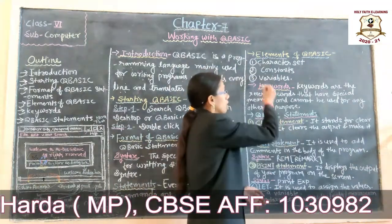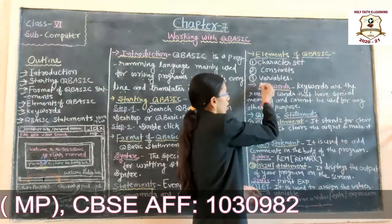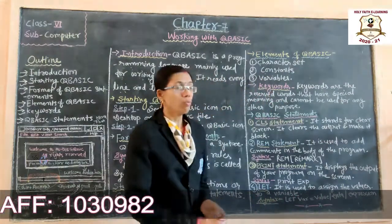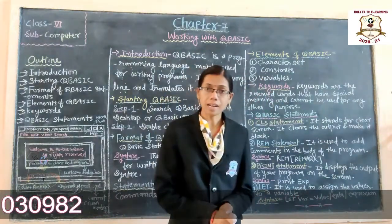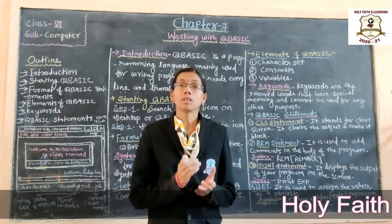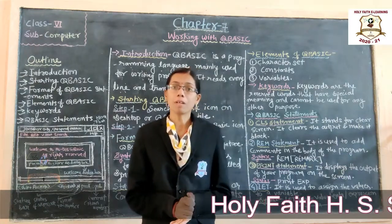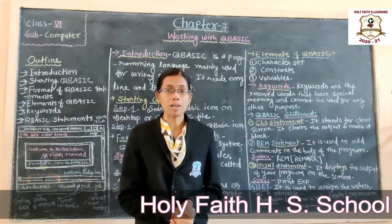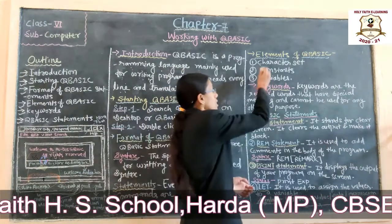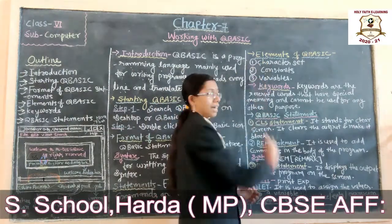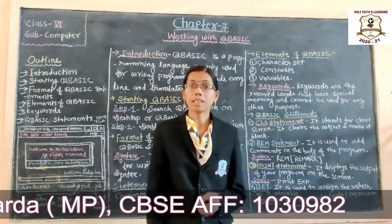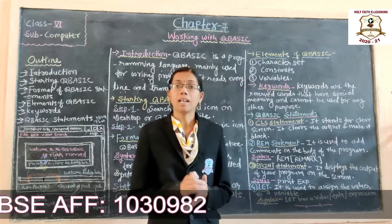The first element is the character set. A character set is a set of symbols used to frame the various components of a program. There are three types in the character set: letters (A to Z), digits, and special characters.